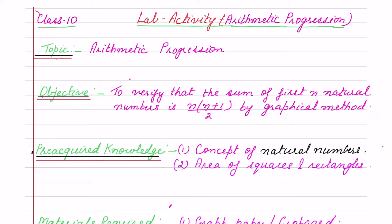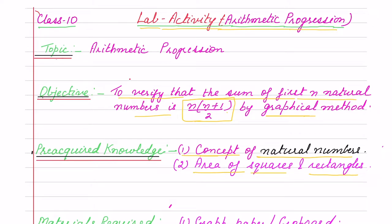Hello children, here I have taken a lab activity on arithmetic progression. The topic is arithmetic progression and what we have to do is verify that the sum of first n natural numbers is n(n+1)/2. We are going to do it by graphical method. The pre-acquired knowledge we need: natural numbers 1, 2, 3, 4 to infinity, area of a square is side squared, and area of a rectangle is length into breadth.